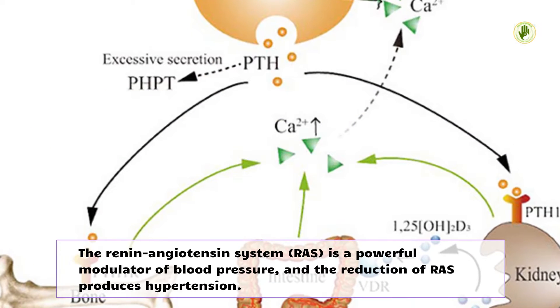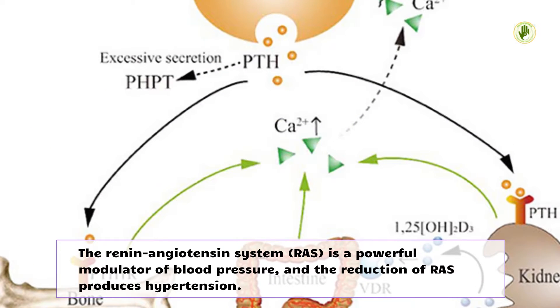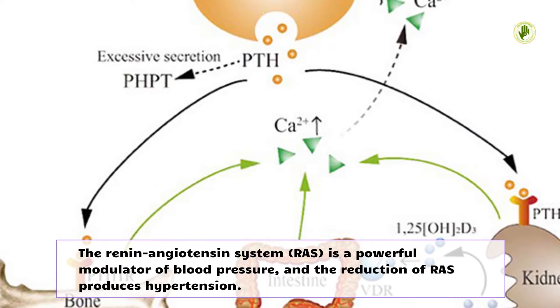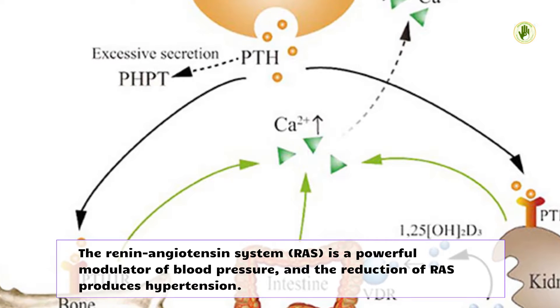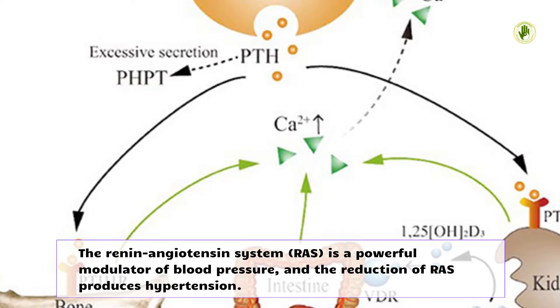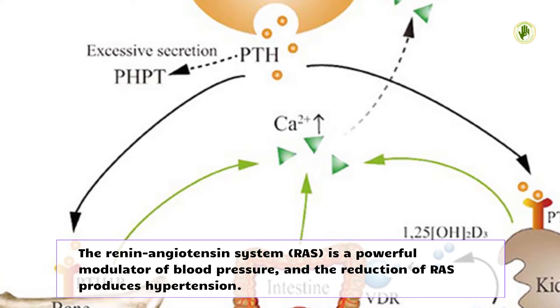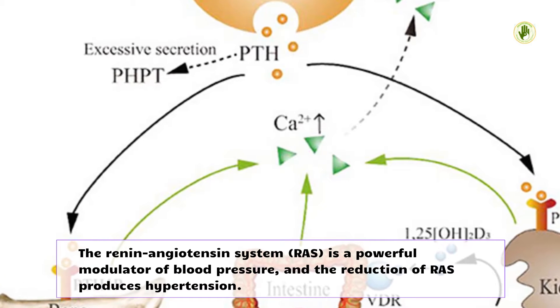The renin-angiotensin system, RAS, is a powerful modulator of blood pressure, and the reduction of RAS produces hypertension.